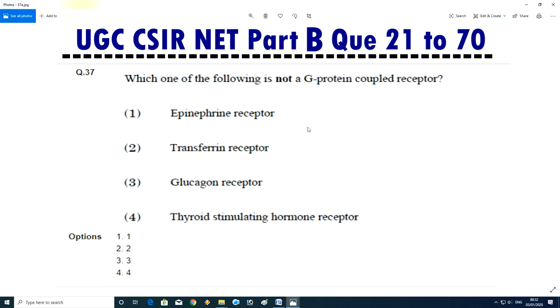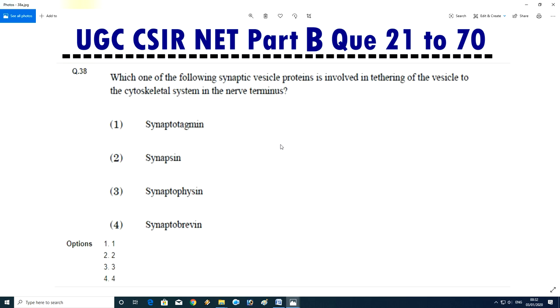Question No.38 - Which one of the following is not a G protein-coupled receptor? Epinephrine receptor, transferrin receptor, glucagon receptor, or thyroid stimulating hormone receptor. Answer is 2, transferrin receptor.